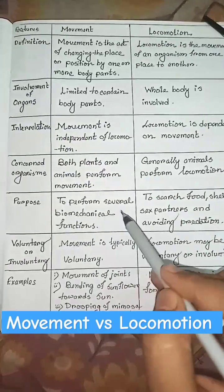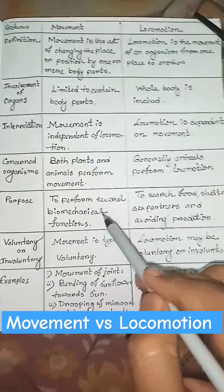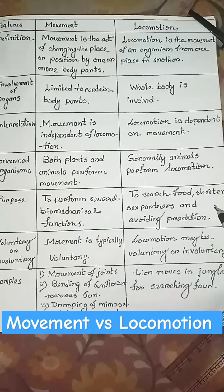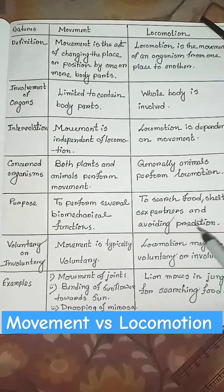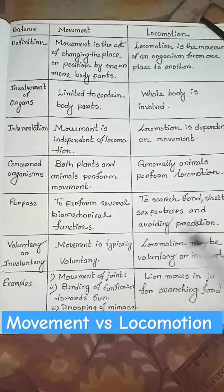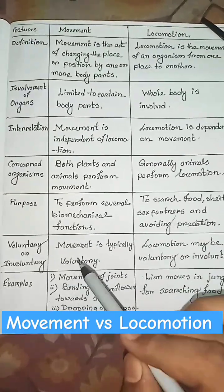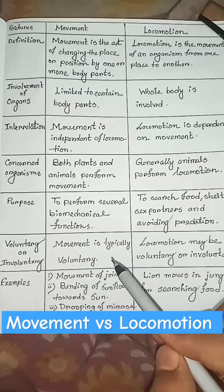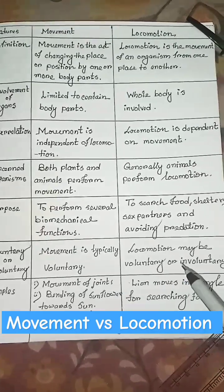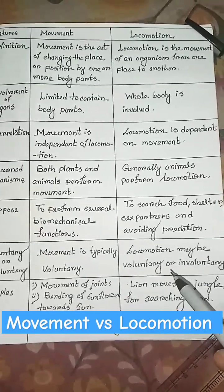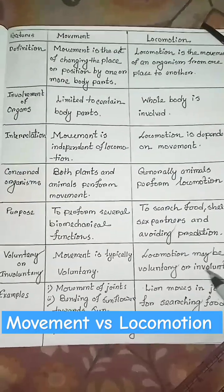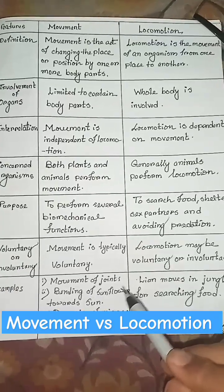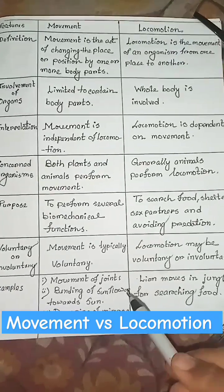Purpose: movement is required to perform several biomechanical functions, but locomotion is required to search for food, shelter, sex partners, and for avoiding predation. Voluntary or involuntary: movement is typically voluntary, but locomotion may be voluntary or involuntary.